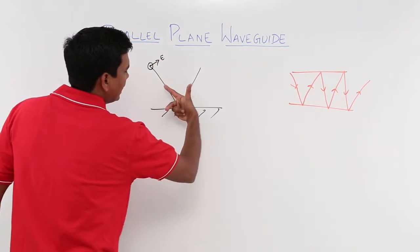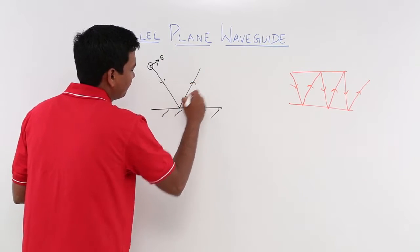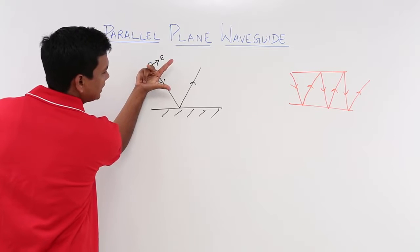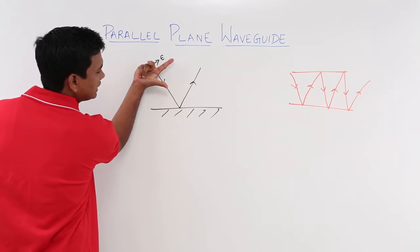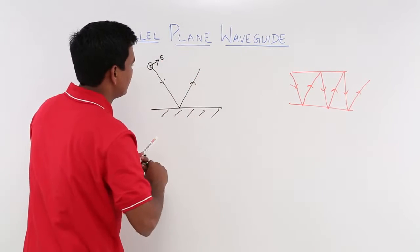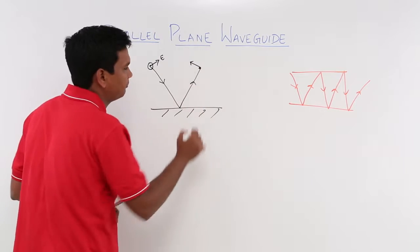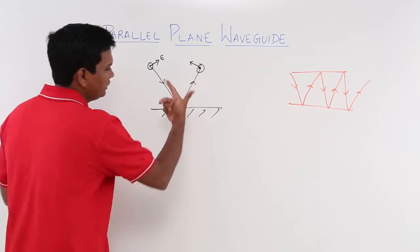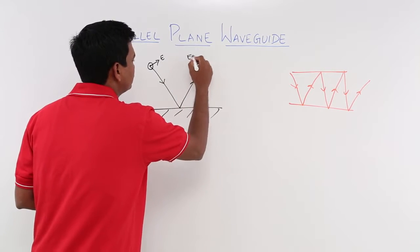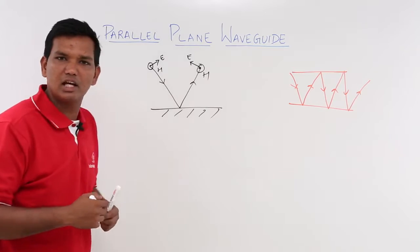If the wave hits the plate and reflects back, this becomes the new direction of propagation. After reflection, the magnetic field is still outside the board, and the electric field remains in this direction. So you have E, you will have H, and again the same pattern continues. This is how propagation is happening along the waveguide.